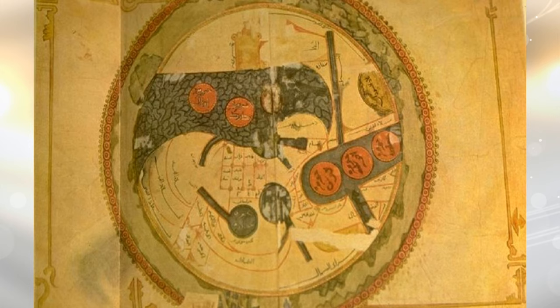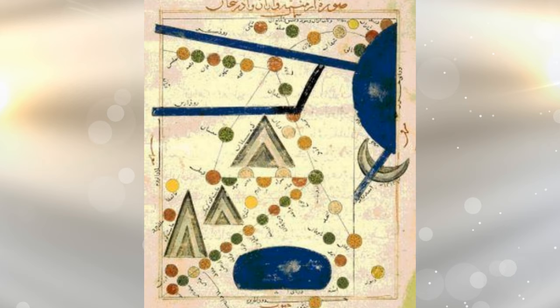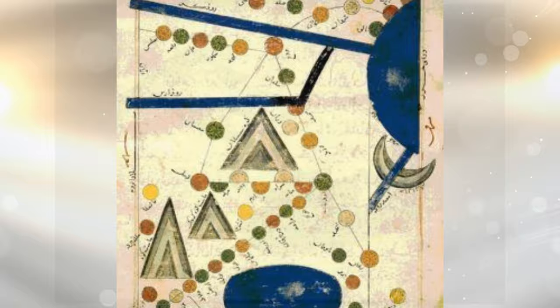He supervised the work of 70 geographers to create a map of then the known world. When his work became known in Europe through Latin translations, his influence made a permanent mark on the development of science in the West.